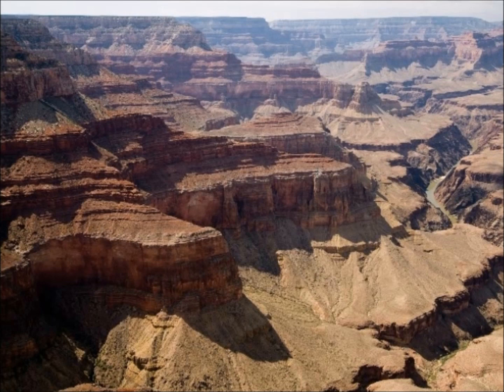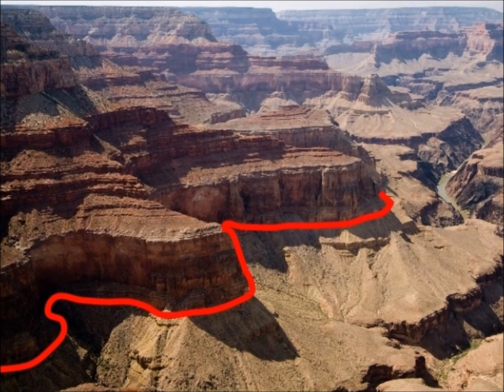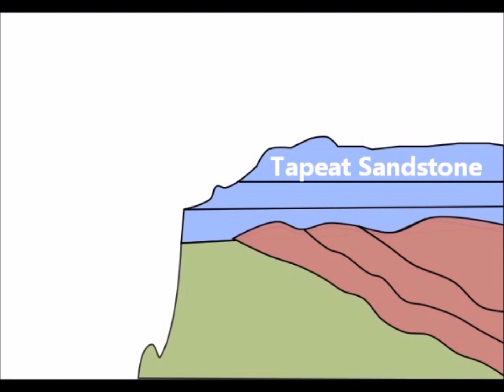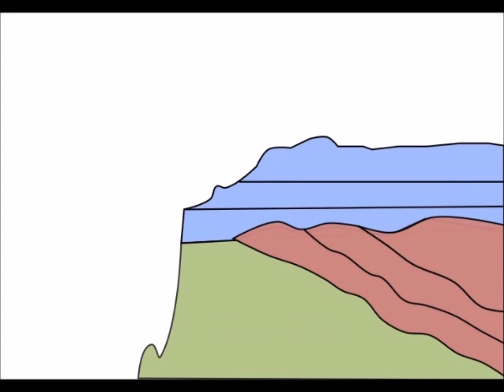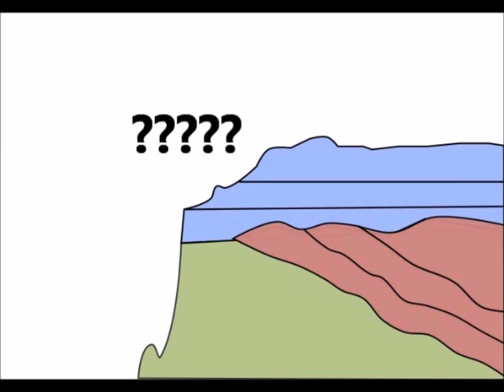The Great Unconformity is a very prominent geomorphic surface found all across the globe, with a great example found in the Grand Canyon. In the canyon, 525 million year old Tapeats sandstones are observed in contact with the Grand Canyon Supergroup and the Vishnu Schist, which are 1.2 billion years old in some places. So, where is 700 million years' worth of rock gone?